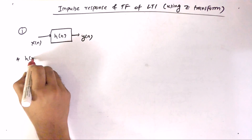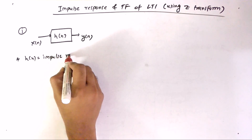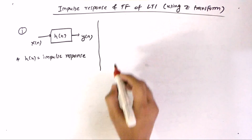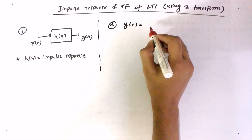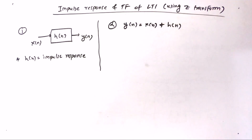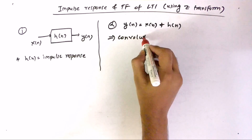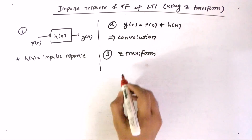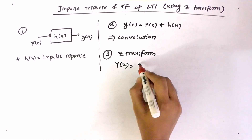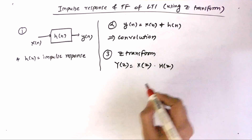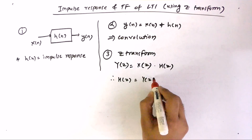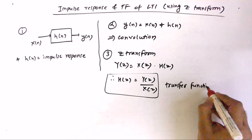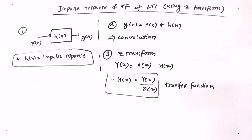H is nothing but the impulse response. Now we have to find the transfer function. We know that we can use convolution: Y is nothing but X convolved with impulse response. If we take the Z-transform, Y changes to Y(Z), and convolution changes into multiplication. So H(Z) is nothing but Y(Z) by X(Z) — this is the transfer function. And H was the impulse response.